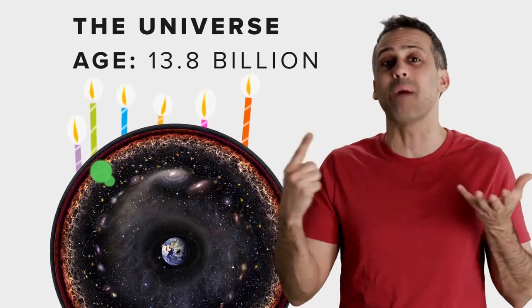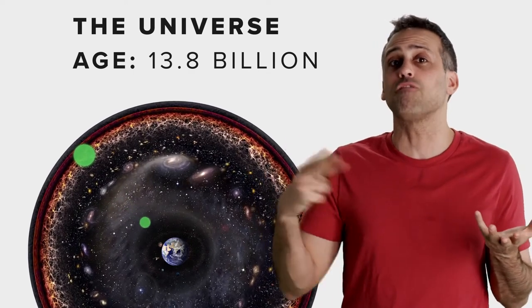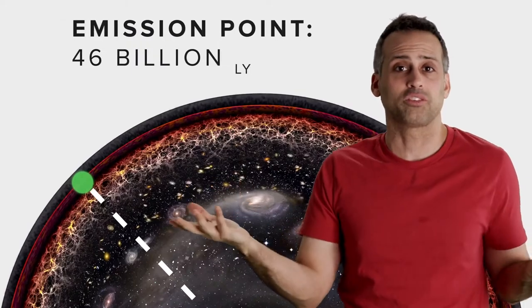In a nutshell, you start with the age of the universe. The current estimate is about 13.8 billion years. That's the maximum amount of time light has had to travel to us. And then you work out how far away the emission point of that light is right now. And that's the radius of the observable universe.